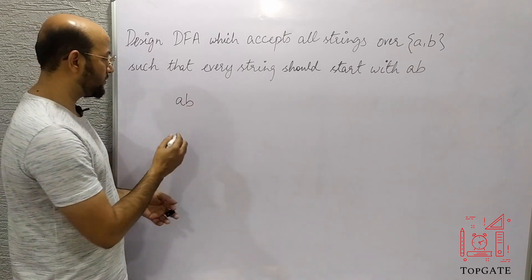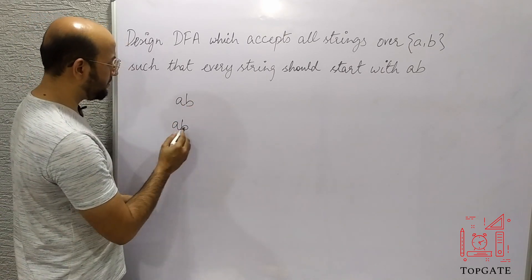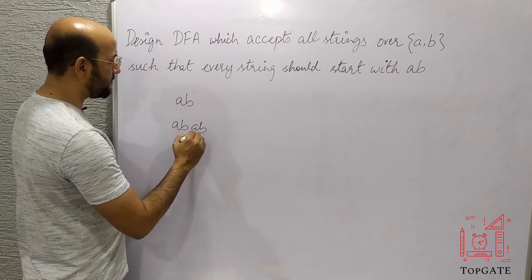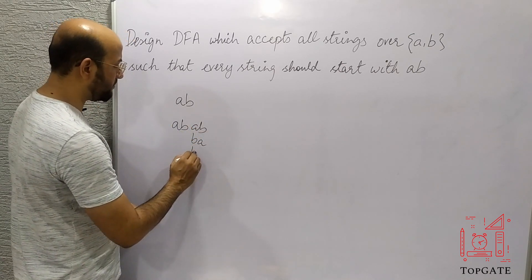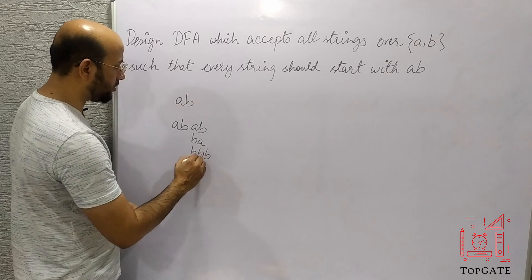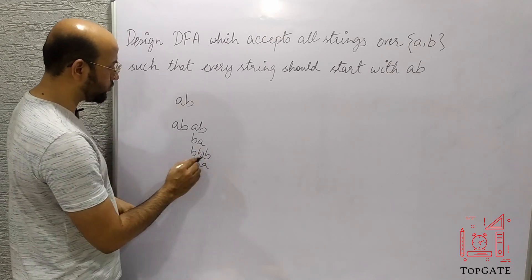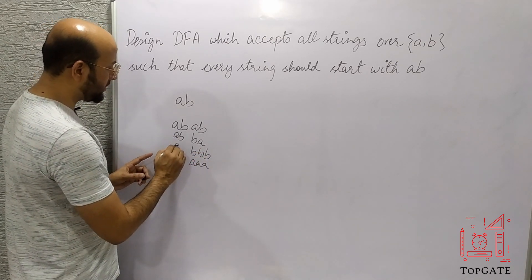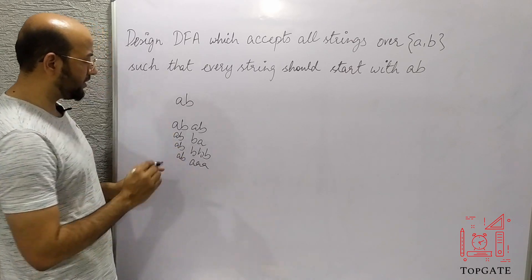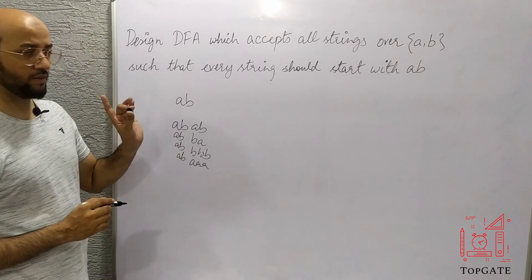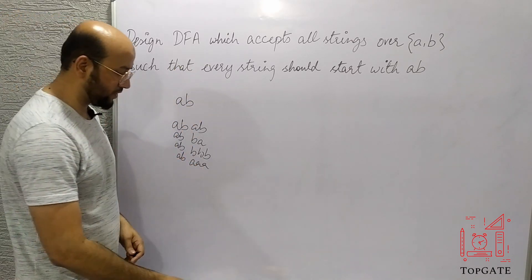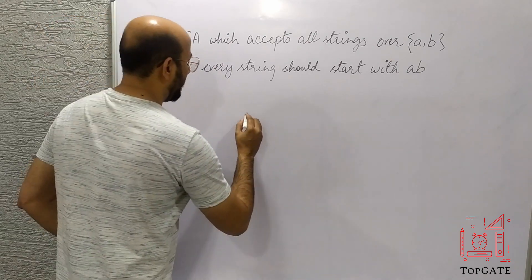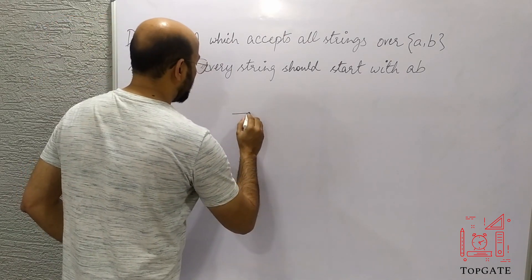After 'ab' I can have anything — I can have 'ab', 'ba', 'bb', or 'aa'. The only requirement is that 'ab' must appear at the start of every string; after that I can have anything.